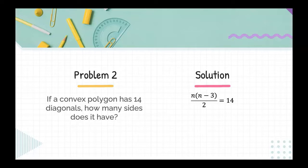I could use the formula N times the quantity N minus three all over two equals 14, because I know that that answer is 14. Multiplying both sides by two, I get this equation, N times the quantity N minus three equals 28.